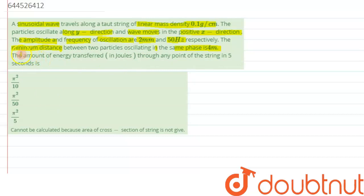Now we have to calculate the amount of energy transferred in Joule through any point of the string in 5 seconds. We know we have been given with a frequency as 50 Hz.